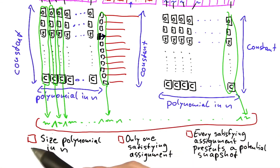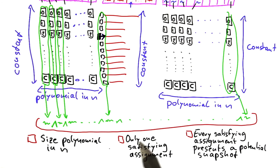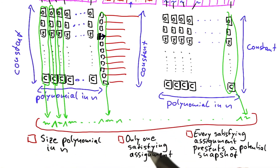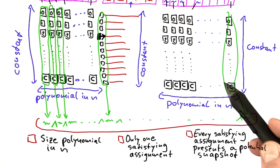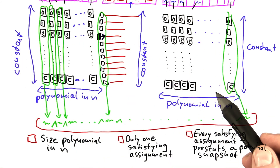Now, of course, there are only three choices here. More than one can be true and you could make your way through by guessing. But before that, I'd encourage you to think through these statements, because once you understand this part, the rest of the Cook-Levin theorem is actually quite easy.